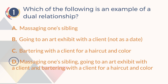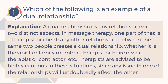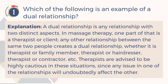The answer is D. Massaging one's sibling, going to an art exhibit with a client, and bartering with a client for a haircut and color. A dual relationship is any relationship with two distinct aspects. In massage therapy, one part of that is a therapist-client relationship; any other relationship between the same two people creates a dual relationship, whether it is therapist-family member, therapist-hairdresser, therapist-contractor, etc. Therapists are advised to be highly cautious in these situations, since any issue in one of the relationships will undoubtedly affect the other.